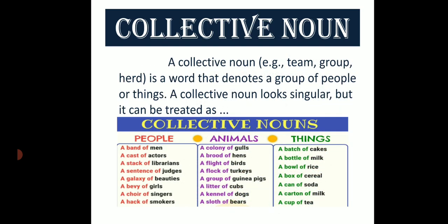Ab hum baat karenge collective nouns ki — samuday vachak sangya ki. A collective noun — for example team, group, herd — is a word that denotes a group of people or things. A collective noun looks singular but it can be treated as a group. Jis sangya se kisi samuday ka bodh hota hai, use samuday vachak sangya kehte hain. For example: a band of men, a cast of actors, a stack of librarians, a sentence of judges.